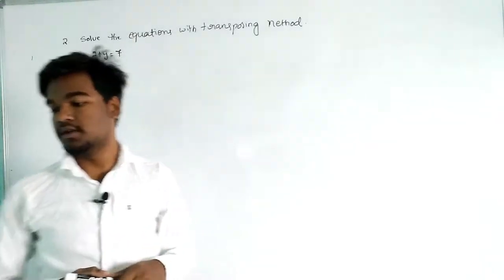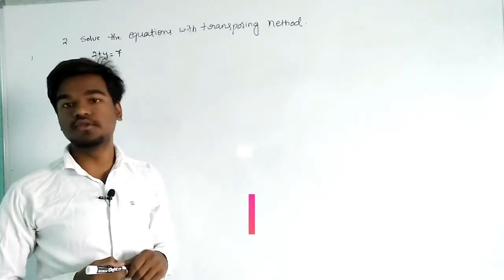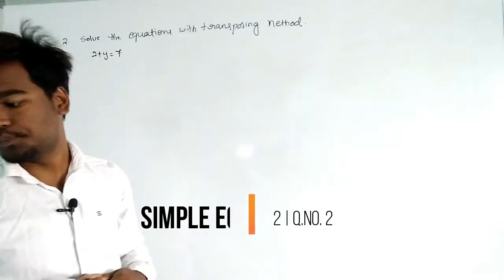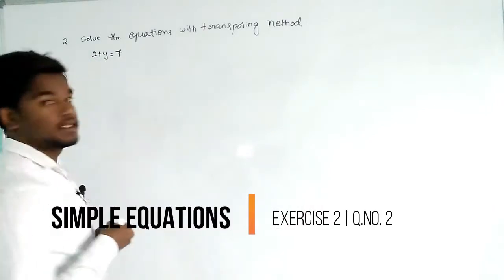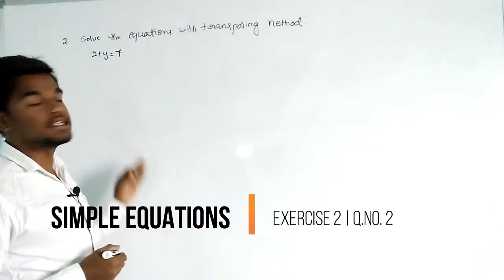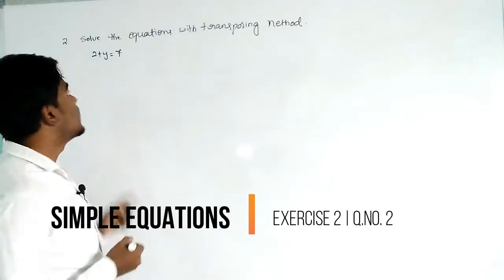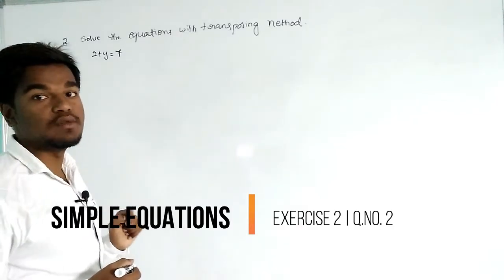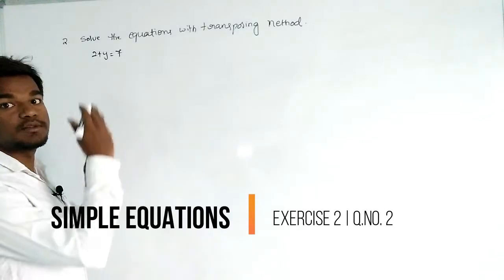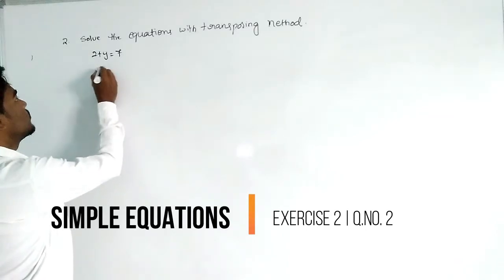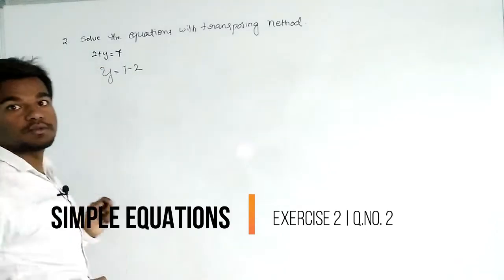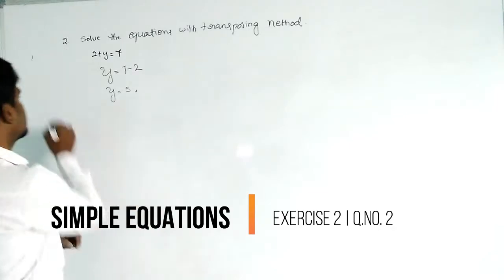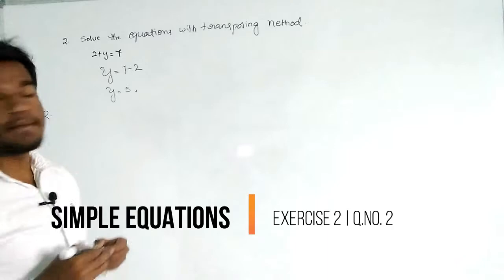Hello everyone. In this module I am going to explain how to solve an equation with transposing. Our first question is y × 2 + y = 7. On the left side we should have only one single variable. Here, plus 2 is on the left side, so we transpose plus 2 to the right side and it will become minus 2. Then y = 5, so this is the answer.